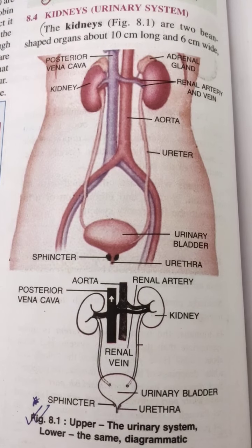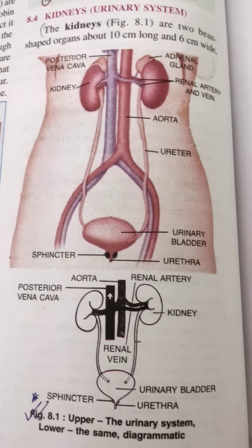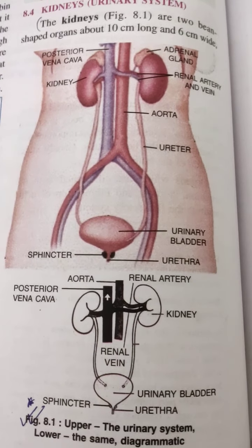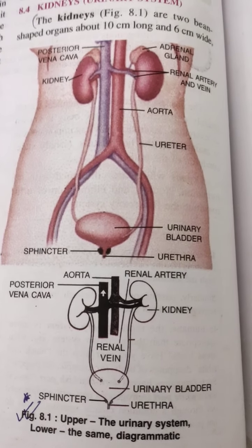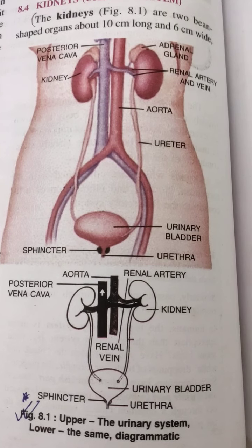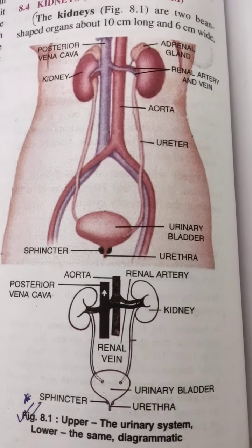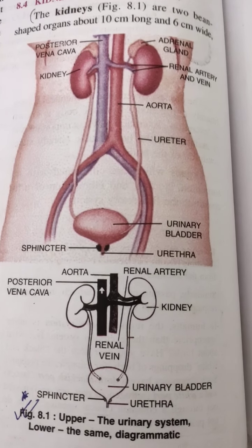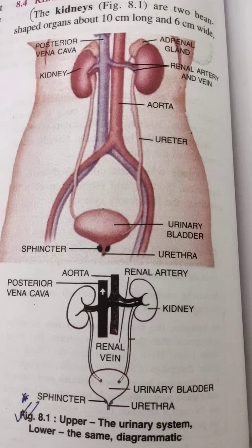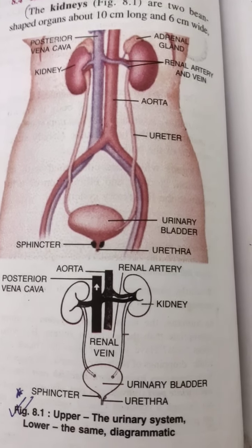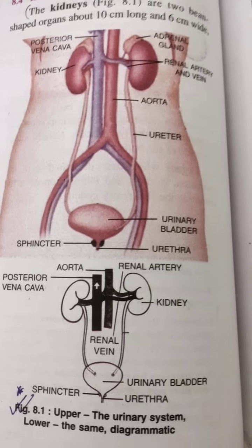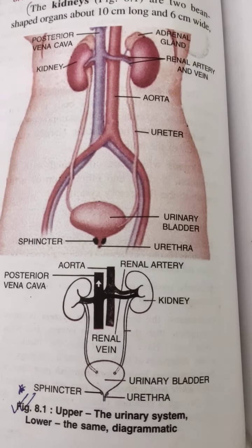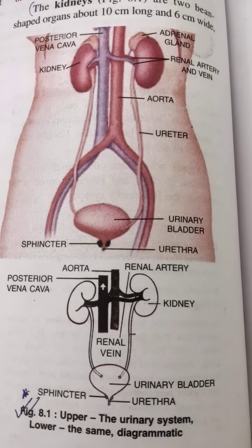Why is the right kidney slightly lower? To accommodate the liver. A tube called the ureter arises from the notch in the median surface of each kidney and connects behind with the urinary bladder in the lower part of the abdomen. The ureters from both kidneys rejoin as they enter the bladder. The front end of the ureter, which enters the kidney, is somewhat expanded and is called the pelvis.